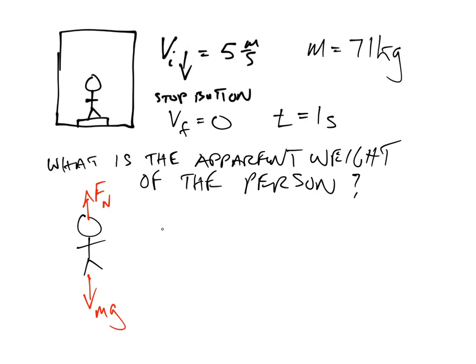And what's really important to realize here is that the apparent weight is what the scale here, what this scale reads is the normal force. So the apparent weight is equal to the normal force. That is an important point to realize. Because the scale is going to read Fn. So now that we know that, we know that we're looking for Fn. So we have to say, okay, Fn equals what?